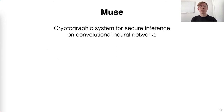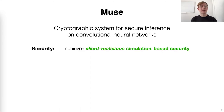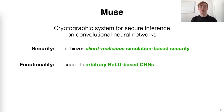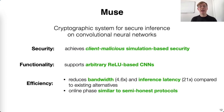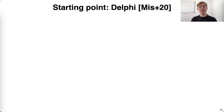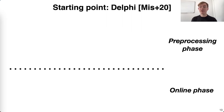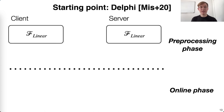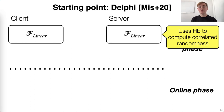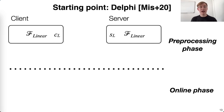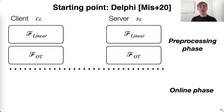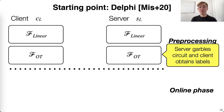Motivated by this, we now turn to presenting our protocol, Muse. Muse is a secure inference protocol which achieves client-malicious simulation-based security. It supports arbitrary ReLU-based CNNs, and greatly reduces both bandwidth and inference latency compared to existing alternatives, while having an online phase similar to semi-honest protocols. To build Muse, we start with the semi-honest secure inference protocol Delphi. Delphi is split into a pre-processing phase, which can be executed at any time, and an online phase, which is executed when the client has an inference query. The first component of the pre-processing phase is some pre-computation for the linear layers, which consists of using homomorphic encryption to compute correlated randomness. After this interaction, the client and server both have state they'll use for evaluating the linear layers. Next, the parties interact to pre-compute the non-linear layers, which consists of garbling some circuits and executing an oblivious transfer.